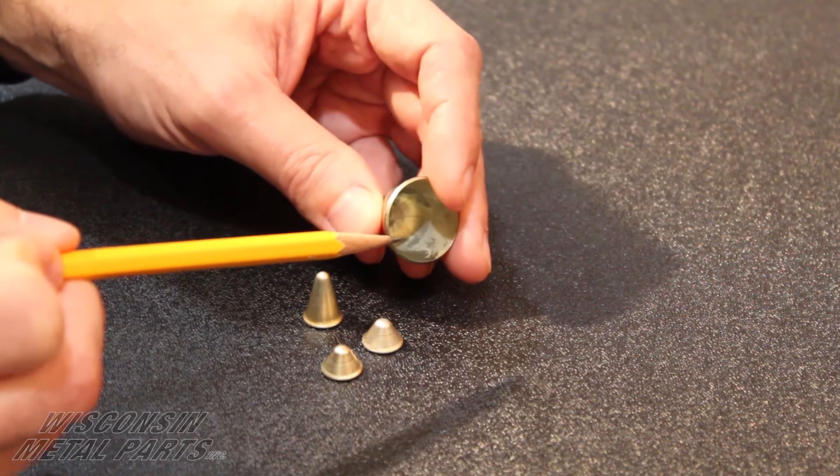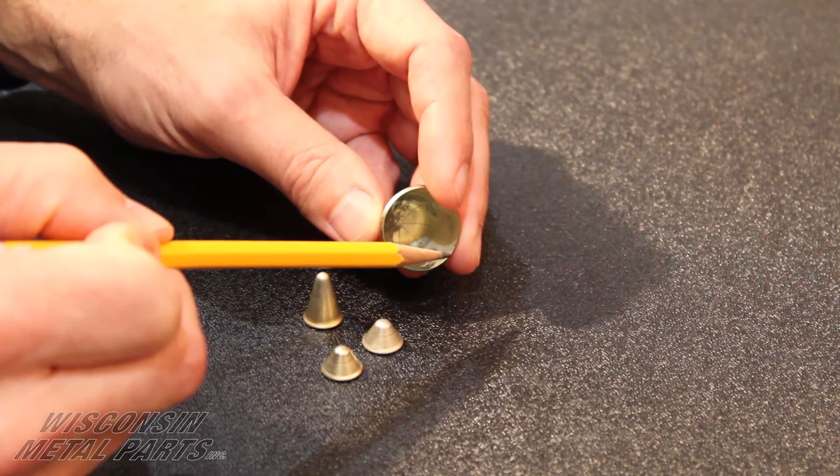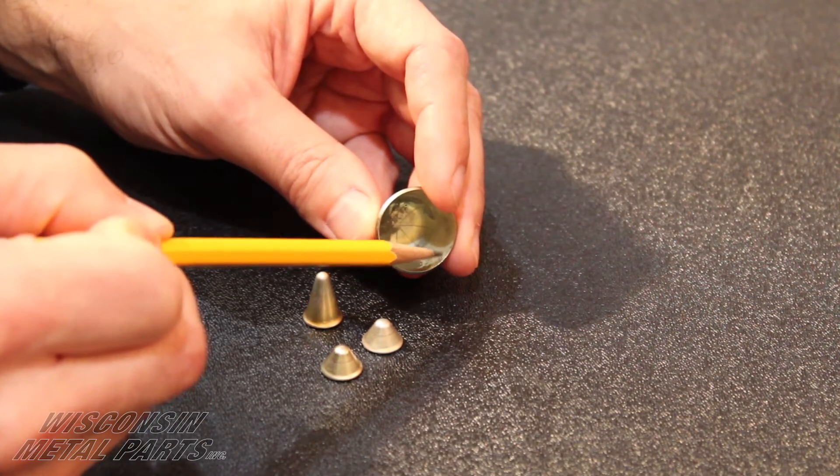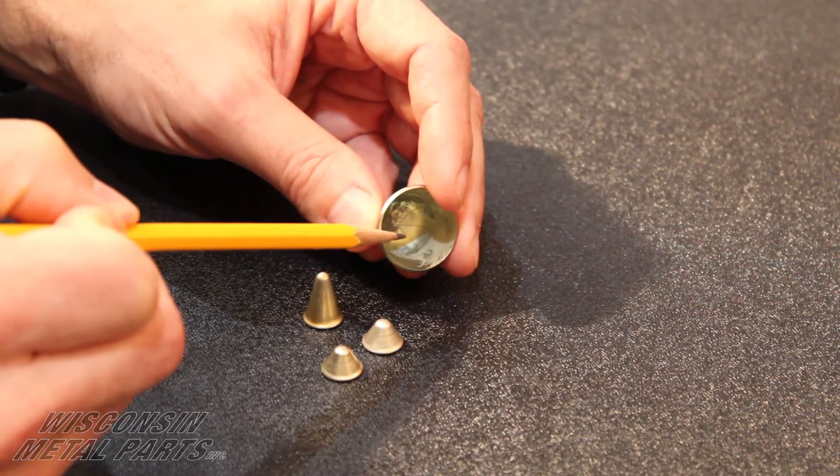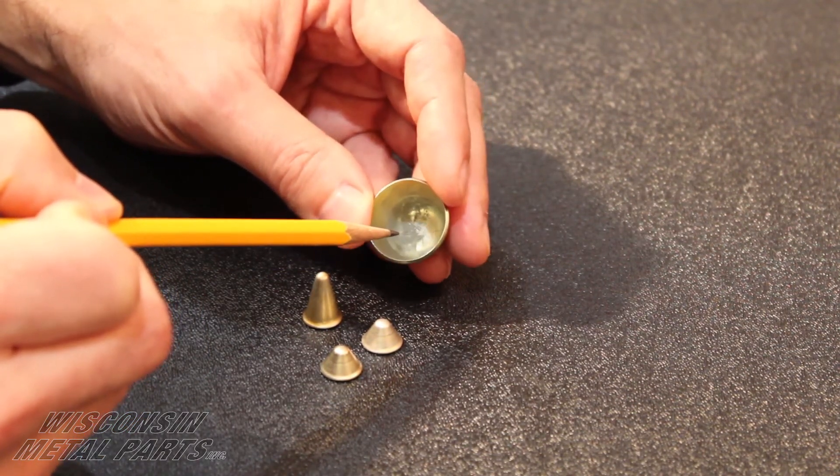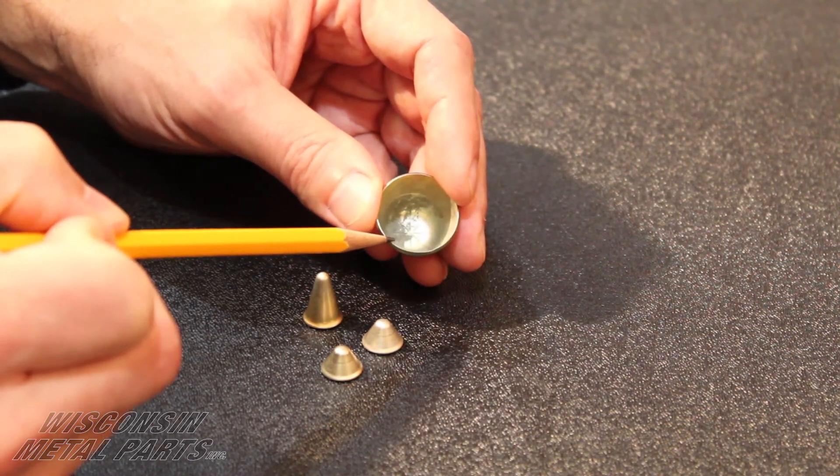This particular part, as with many of these, one of the challenges that we face with it is rolling over an edge. So we've got a lip that gets rolled over here underneath this part so that makes it challenging when you're running this as a progressive part in production.